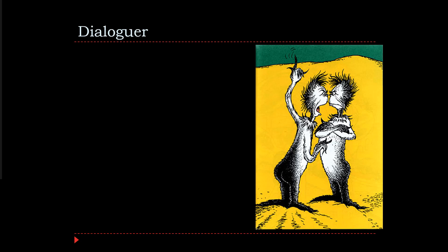The next problem participant is the dialoguer. This is the learner who wants to engage in a dialogue with you rather than a discussion with the group. She might even do this when in a small group, calling you over to draw you into the group conversation. There are a few methods to counter this problem.